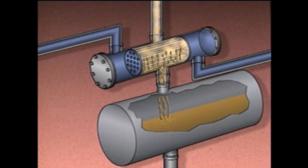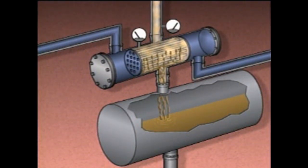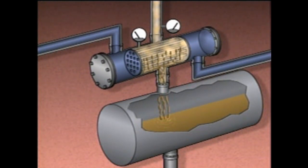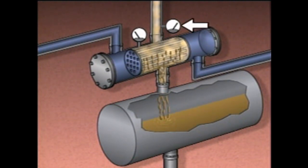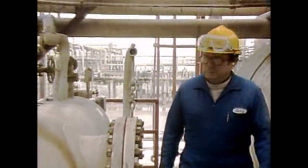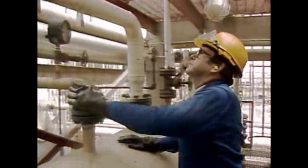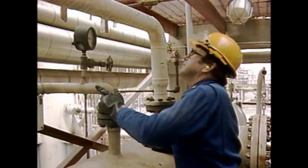The receiver collects the distillate that drains from the shell of the condenser, and the distillate is usually sent on for further processing or to storage. As the vapor condenses, a low pressure is created inside the condenser. This low pressure draws more vapor into the condenser. In order for vapor to continue to flow in, the pressure inside the condenser must be lower than the pressure of the entering vapor. Condensers can be operated at almost any pressure, as long as it's below that of the entering vapor.